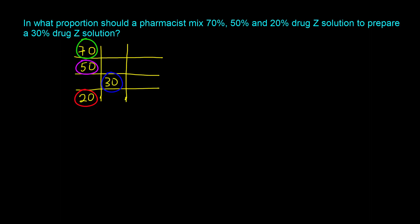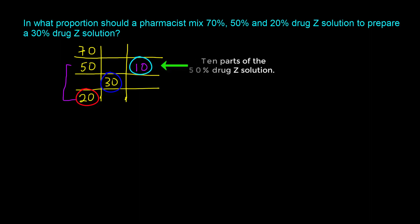One way to think about the three-component allegation method is as though you were doing it for two components twice. First, we apply it to the 50%, 20%, and desired 30%. Take 30 minus 20, which gives 10 — that's 10 parts of the 50% drag-Z solution. Then take 50 minus 30, which gives 20 — that's 20 parts of the 20% drag-Z solution.